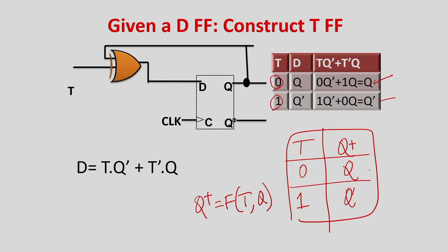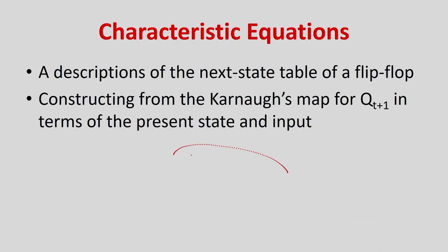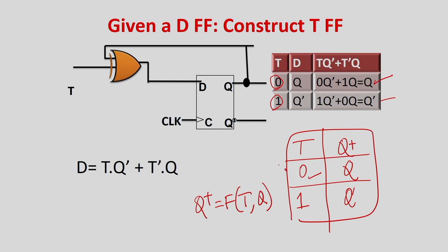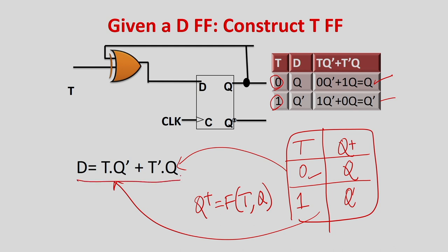Characteristic equations describe what will be the value of Q-plus in terms of input T and the present state. From the characteristics table, if you solve using a Karnaugh map: for the 0 case we get T'Q, and for the 1 case we get TQ'. So T'Q plus TQ' gives the required input to get the corresponding output of a T flip-flop. We can construct a T flip-flop out of a D flip-flop if we know the characteristic equation of the T flip-flop.